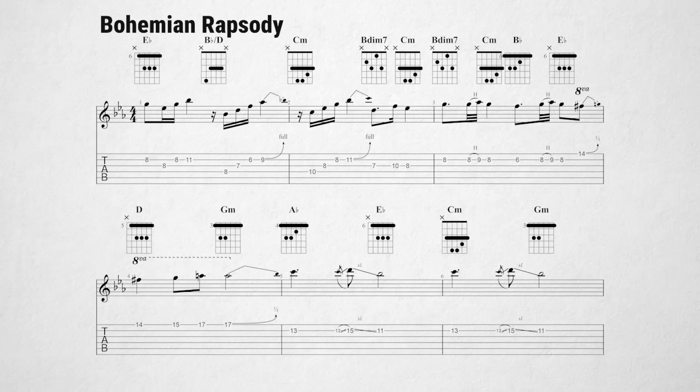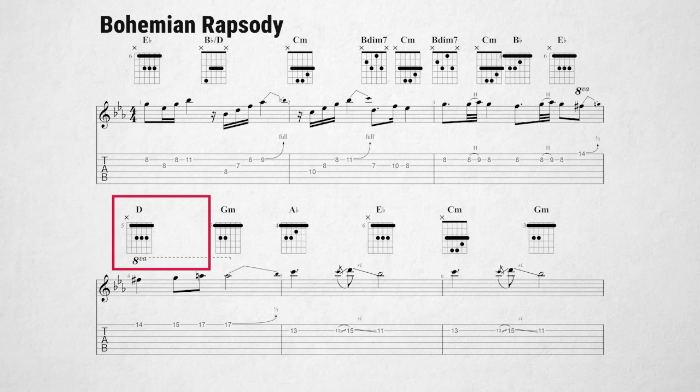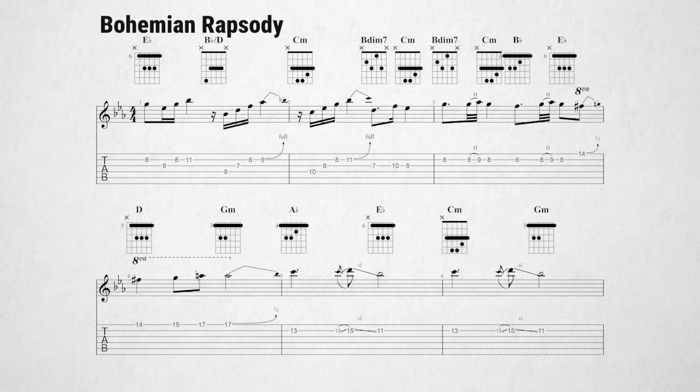In Bohemian Rhapsody by Queen — which is in the key of E flat major at this stage of the song — Freddie Mercury uses a secondary dominant: D major for the third degree G minor in the key of E flat. D major is not part of the E flat major key; instead, it is the five of three, the secondary dominant for the third degree G minor in E flat major. More interesting things happen here too, which I'll explain later. It sounds like this.